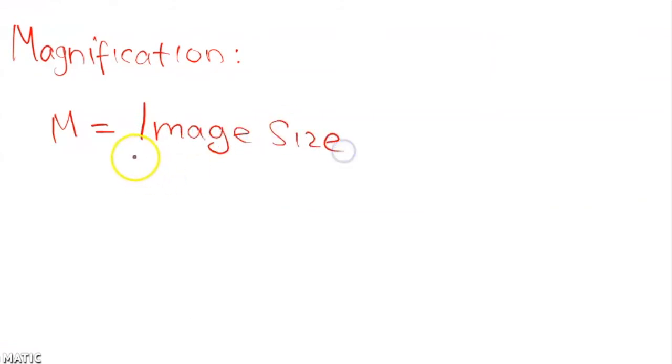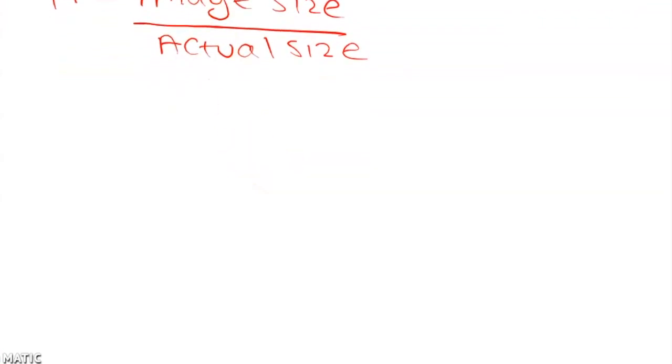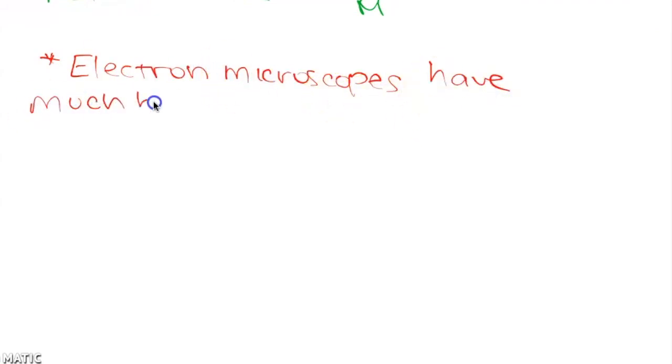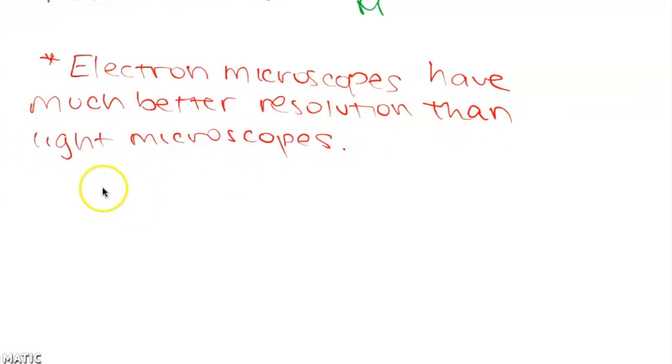You also need to know the formula for finding magnification in an image. It can be given by magnification equals image size over actual size. Obviously you can rearrange the formula however you need to. When we start talking about the ultrastructure of cells you need to know that electron microscopes have a much shorter wavelength than light microscopes so they have better resolution. So when we talk about finding the ultrastructure of cells we can only really do that through electron microscopes.